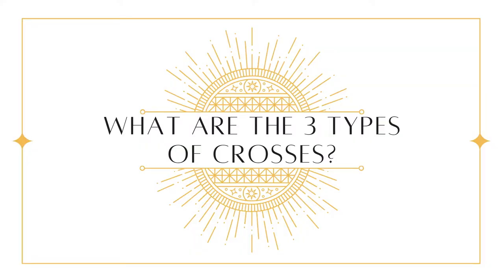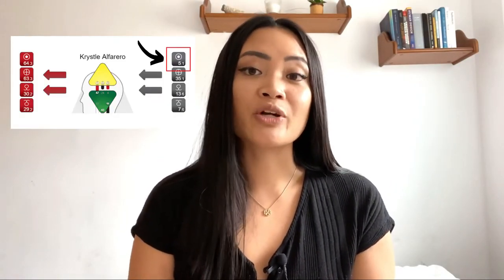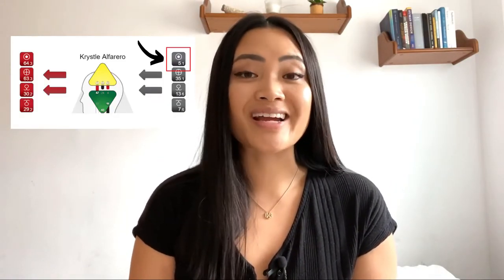In total there are 192 different possible crosses — essentially 192 different life themes. Your cross is determined by your personality or conscious sun gate, which is that top right number on your body graph chart, corresponding to one of the 64 gates in human design. Within each gate there are three different variations of the incarnation cross, each representing a different type of life theme.